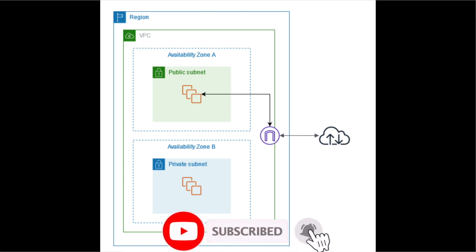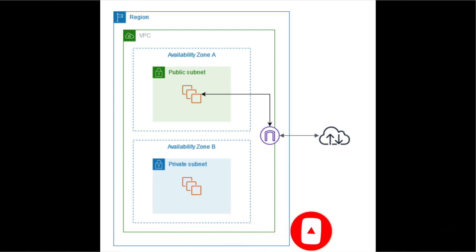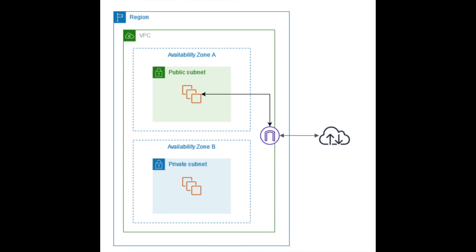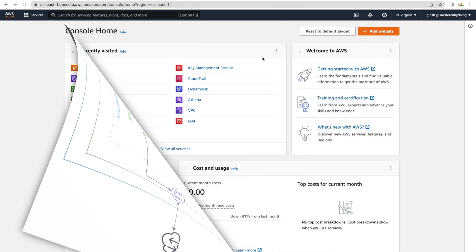An instance in a public subnet has a public IP, whereas an instance in a private subnet will not have a public IP — that is a key difference. We'll see it happening; we'll see how instances connect to the internet, and why an instance in a private subnet will not be able to connect to the internet. All these things we'll see in action in the management console.